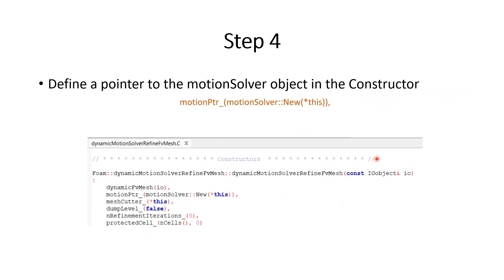Step 4 is to define a pointer to the motion solver object in the constructor. This is done by adding the line: motionPointer = motionSolver::New(*this). This line is added in the constructor section, after the dynamicFvMeshIO initialization.